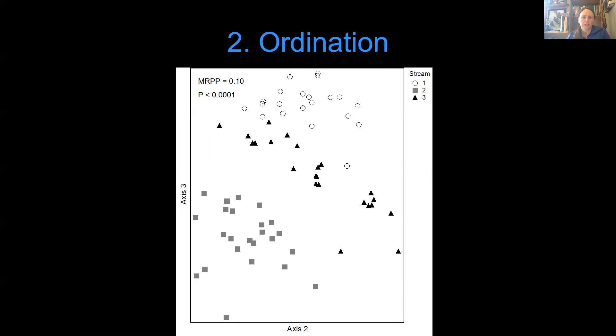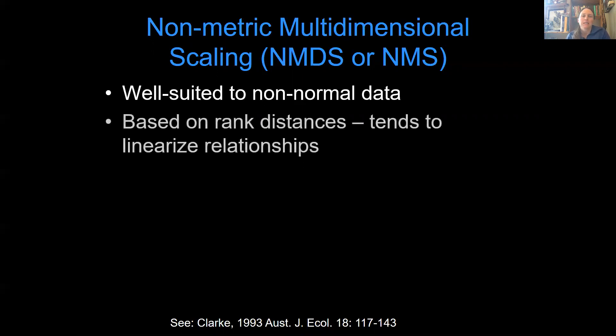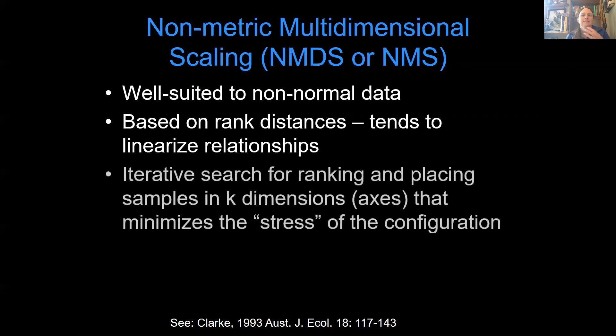So again, here's an ordination. We're going to talk a little bit more about non-metric multi-dimensional scaling ordination. There are lots of different kinds of ordination. We're just going to focus on this one because it's used commonly in ecology. It's well suited to non-normal data. A lot of species are distributed non-normally across the landscape. It is based on rank distances, which you don't really need to understand, but it helps in terms of the kind of non-parametric approach. And it does this kind of iterative search for placing samples in k dimensions, however many axes you want, usually two or three is best. And it minimizes the stress of the configuration.